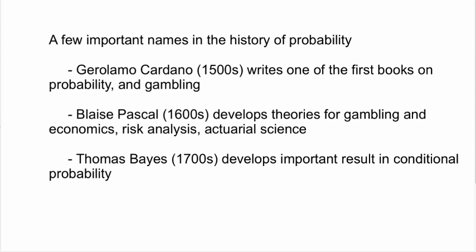This is the Week 12 video on Probability, Odds, and Gambling. A few important names in the history of probability: Gerolamo Cardano lived in the 1500s and wrote one of the first books on probability and gambling. Blaise Pascal lived in the 1600s and developed theories for gambling, economics, risk analysis, and actuarial science — probability used in the insurance industry. Thomas Bayes lived in the 1700s and developed important results in conditional probability.